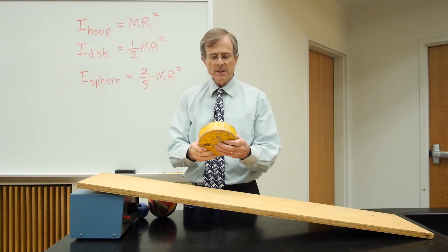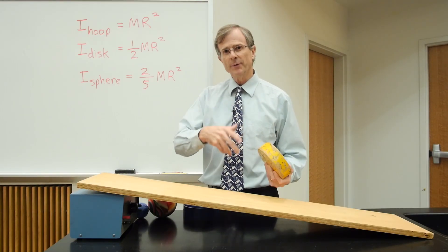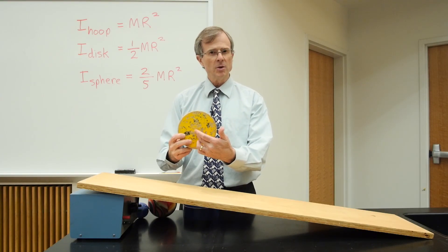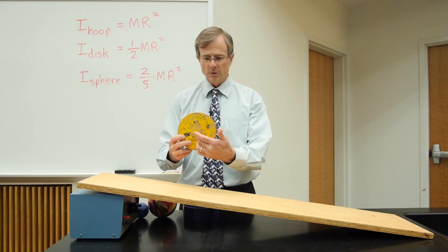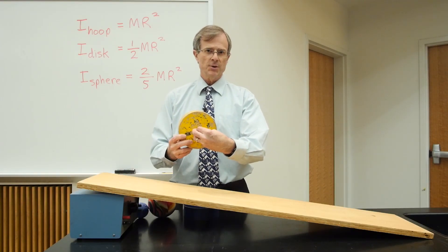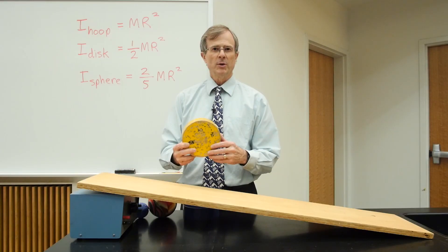And the reason it's less than the moment of inertia of the hoop, assuming that both of them have the same mass and the same radius, is that its mass is concentrated closer to its axis of rotation. And whenever mass is close to the axis of rotation, that leads to less of an effect on the moment of inertia.